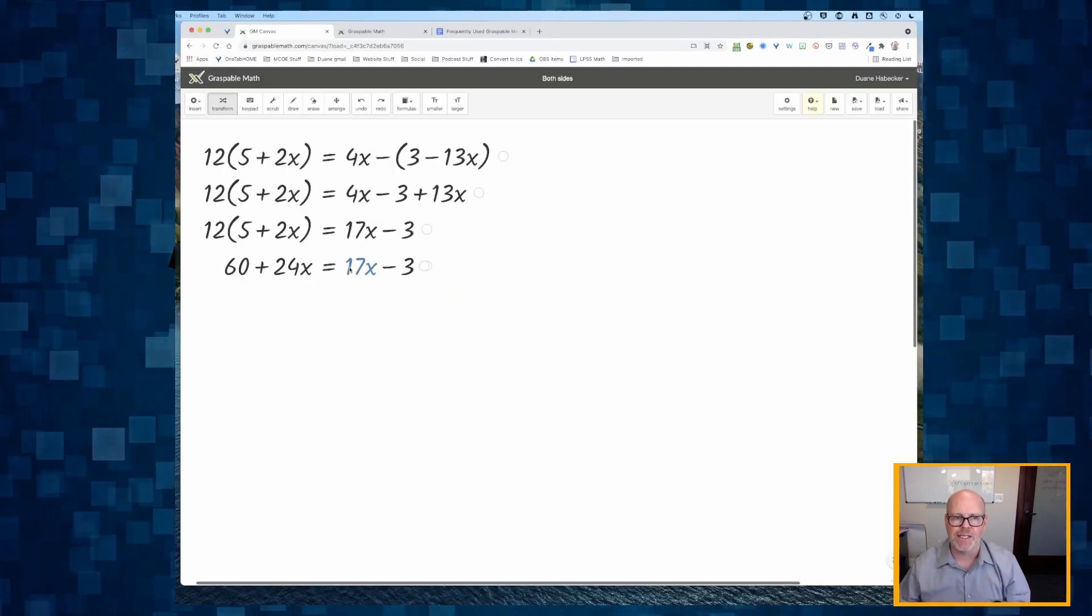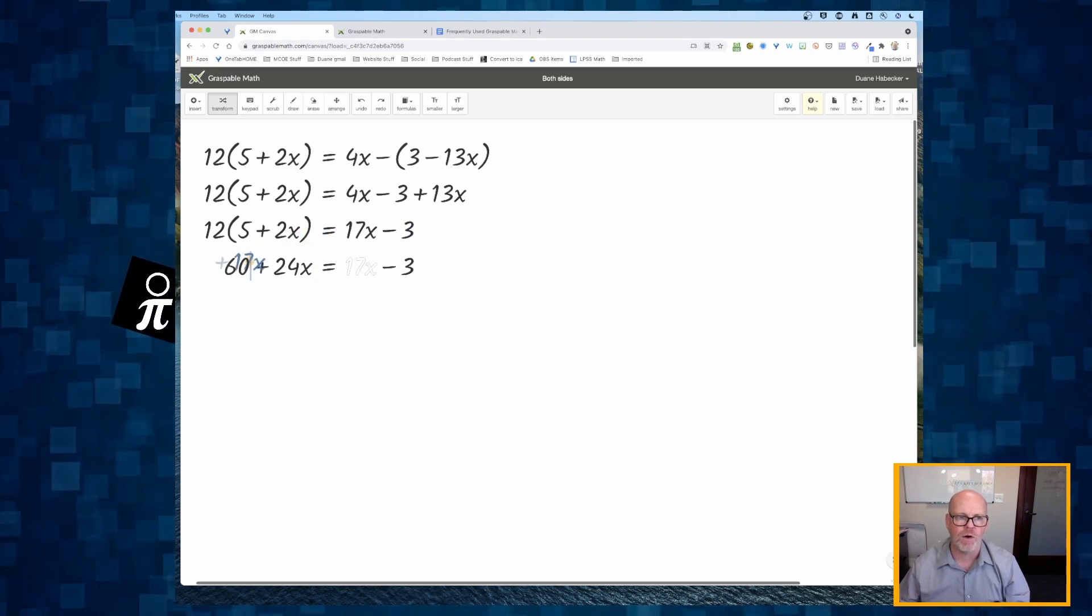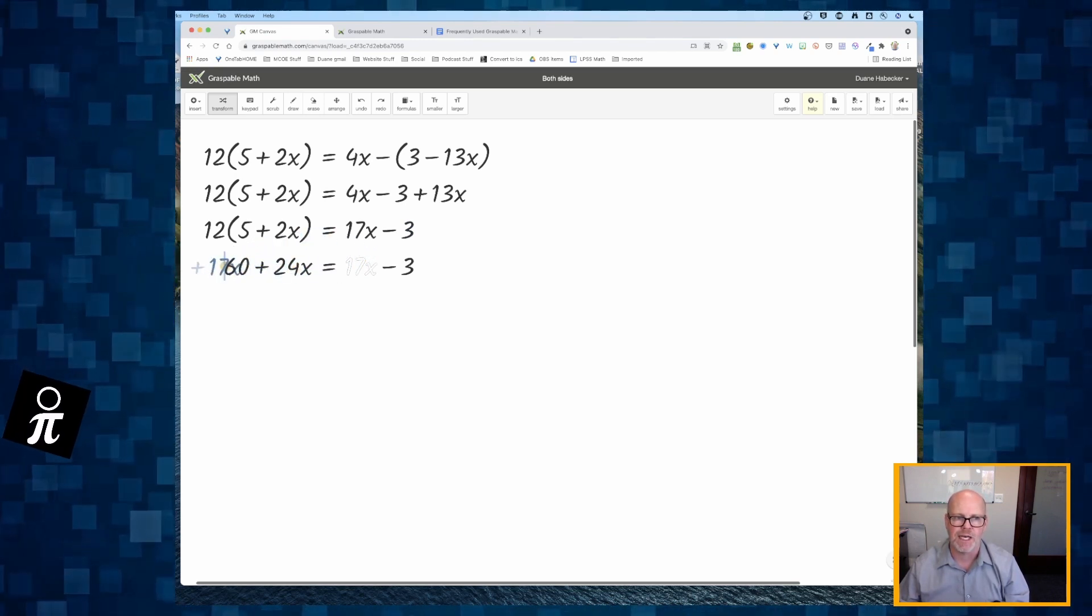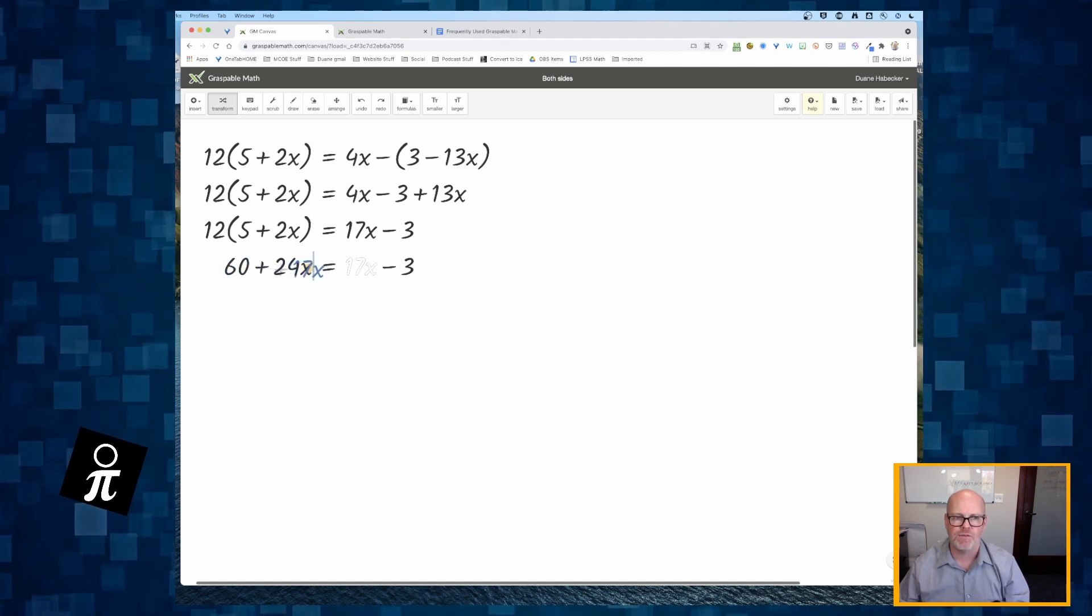I didn't accidentally get the equal sign or the minus sign. And with that 17x highlighted, I'm going to drag it over to the left side. And it doesn't really matter where on the left side, but I'll put it next to that 24x.